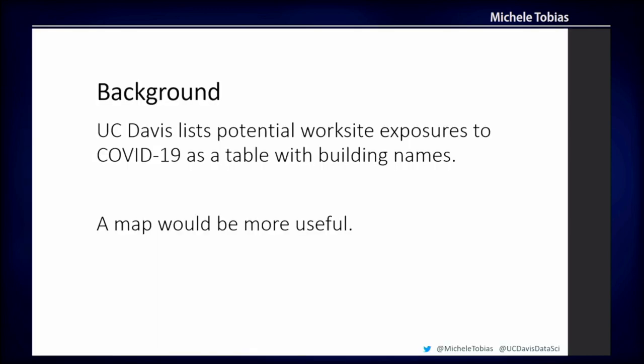A little bit of background. The University of California, Davis is required by the state of California to list potential COVID exposures that happen in work sites. To meet that requirement, they produce a table posted on a website every day, listing the building name, where the exposure happened, and the dates. As a map person, I think a map would be a lot more useful for this.